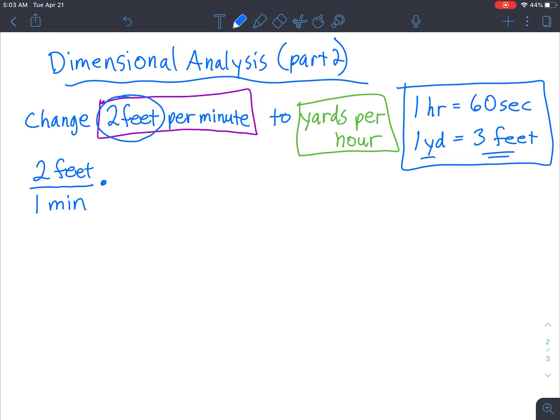And remember, you have to have the units diagonal from each other. So when you see feet up here, it means I want to put the feet part right here on the bottom. Then on top, I'm going to put what three feet equal, which is one yard. Okay, so we've got that part, and let's just double check. Feet, feet, good.